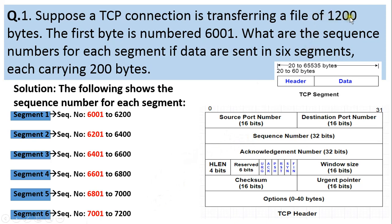The file of 1200 bytes was given to us, and this file was split into equal-size segments, each carrying 200 bytes. We were supposed to write down the sequence numbers carried in each of the segments. It was a very simple example.